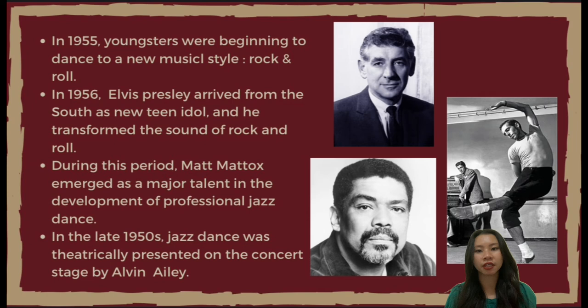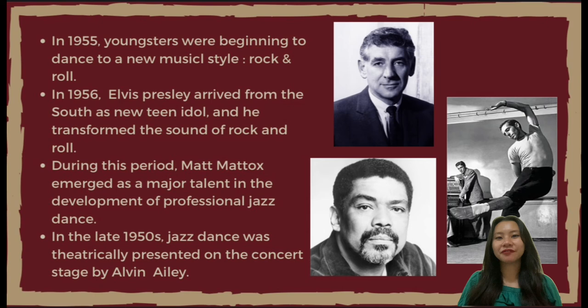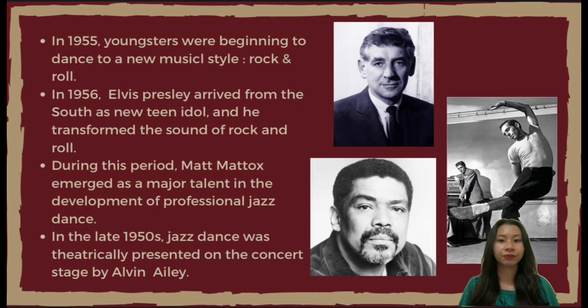Rock and Roll was a recreation by white musicians of the kinds of music black musicians had been performing for 50 years. Teenagers now danced at home and at record hops to popular music with a big and often syncopated offbeat. In 1956, Elvis Presley arrived from the South as a new teen idol and transformed the sound of Rock and Roll, presenting a blend of hillbilly, gospel, blues, and popular music. In 1957, Leonard Bernstein and Jerome Robbins used Latin American rhythms in West Side Story, a landmark in American jazz dance Broadway productions.